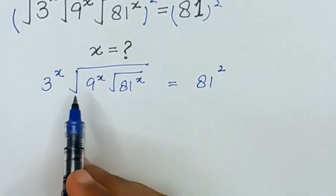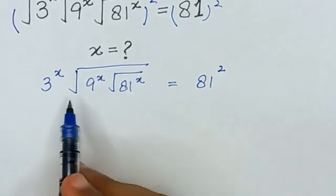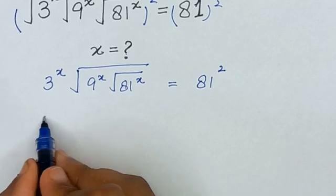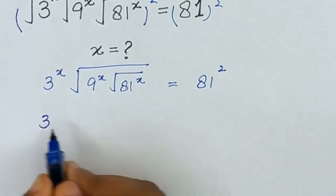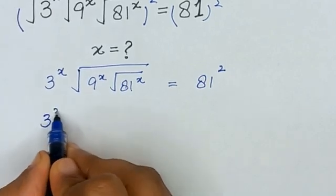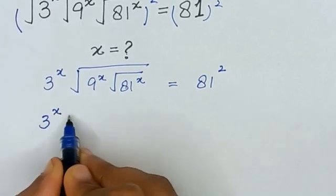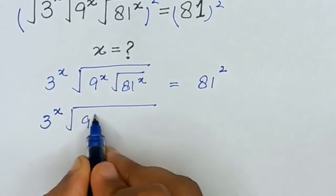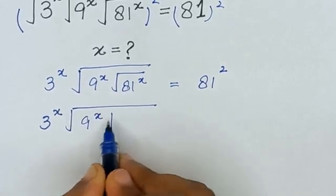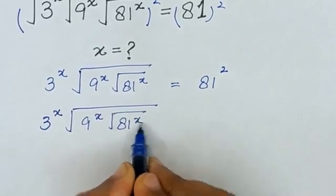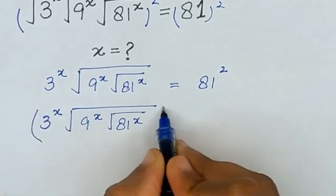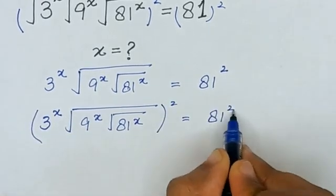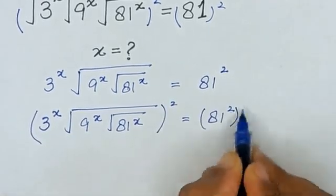Now I will apply the square again on both sides to remove this radical sign. So it will be 3 raised to the power x, times 9 raised to the power x, times the square root of 81 raised to the power x squared, and it is equal to 81 squared times squared.